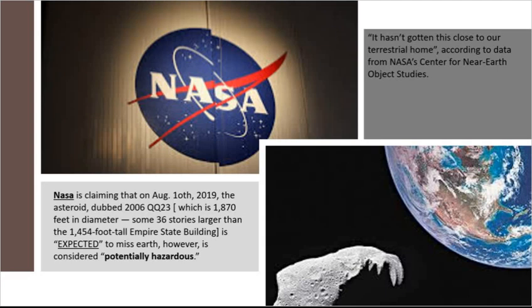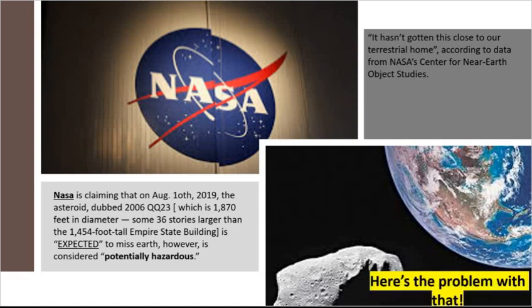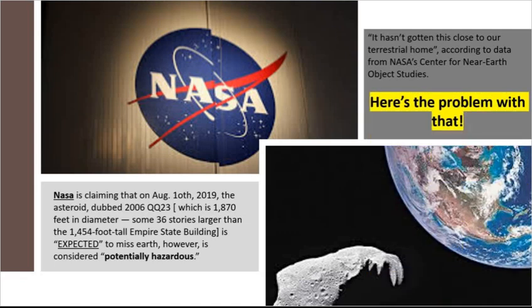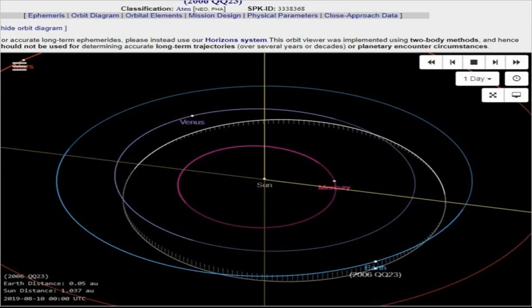It hasn't gotten this close to our terrestrial home, according to the data from NASA's Center for Near-Earth Object Studies. Here's the problem with that. The orbital data software being used is a two-body method and hence should not be used for determining accurate long-term trajectories or planetary encounter circumstances.